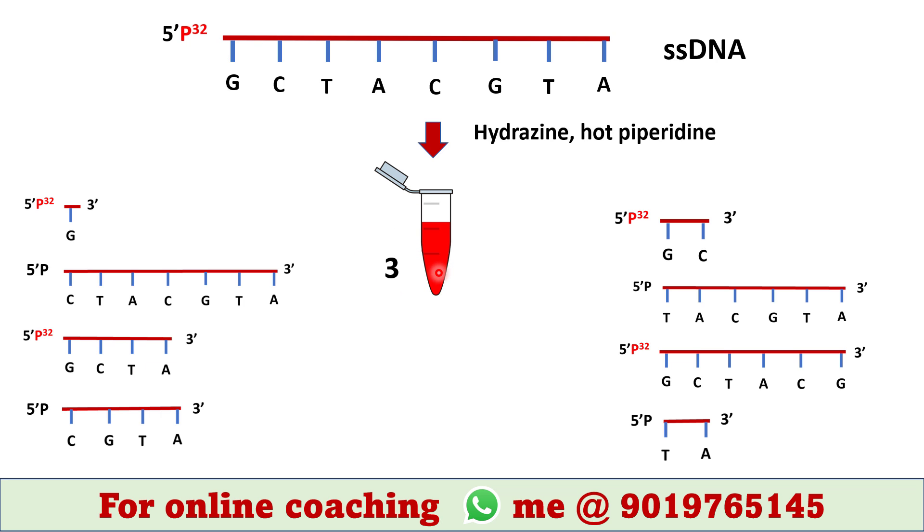In tube 3, we have hydrazine and hot piperidine. These chemicals cleave DNA sequence at cytosine as well as thymine. Hence, following fragments are generated in tube 3.